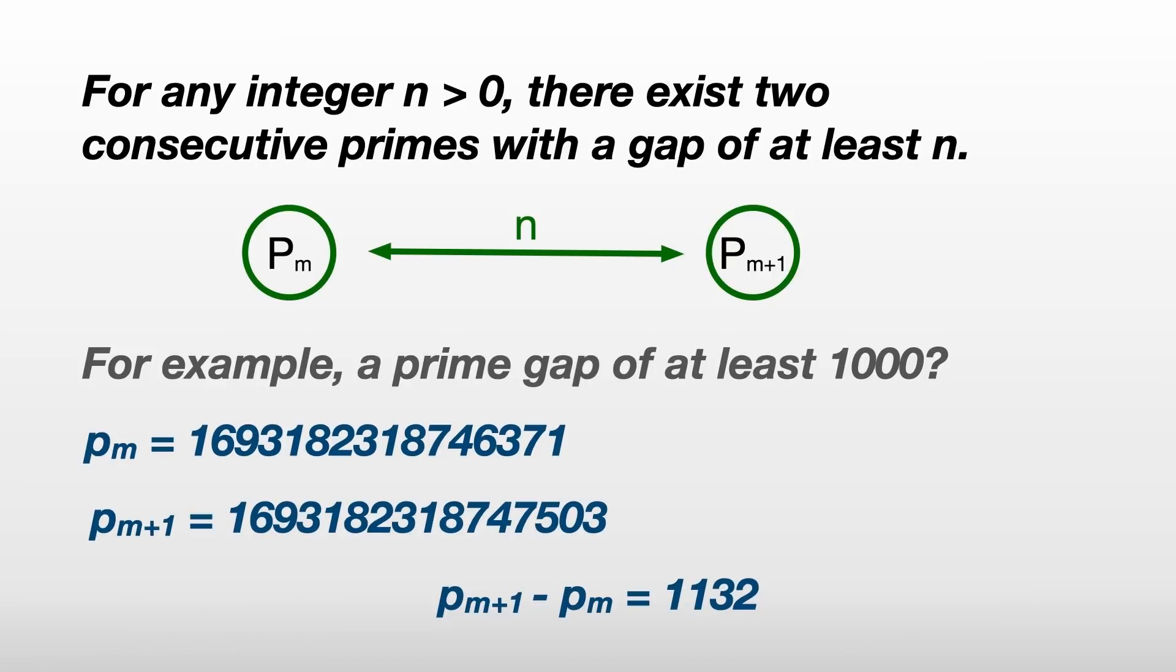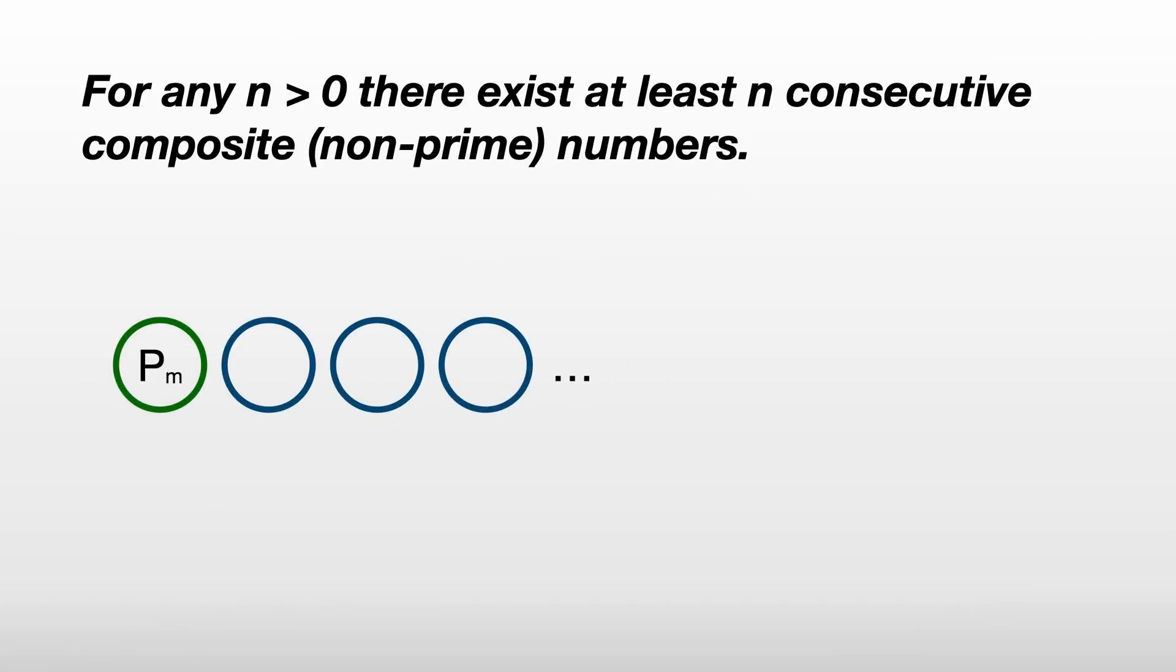How do we prove this? Well, actually, we don't prove this directly. We prove something else which, in turn, implies this is true. And this is what we'll prove. For any n greater than 0, there exist at least n consecutive composite numbers.